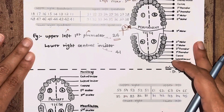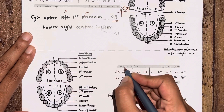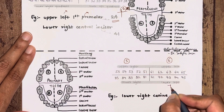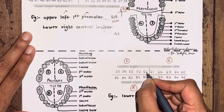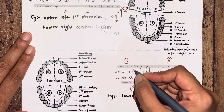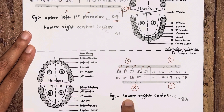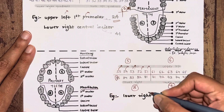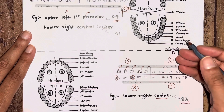For the primary dentition, the quadrant numbers change: upper right is five, upper left is six, lower left is seven, and lower right is eight. There are five primary teeth in each quadrant: central incisor, lateral incisor, canine, first molar, and second molar. For example, the FDI notation for the lower right canine in primary dentition: lower right is quadrant eight and canine is tooth number three, so it is written as '83'.